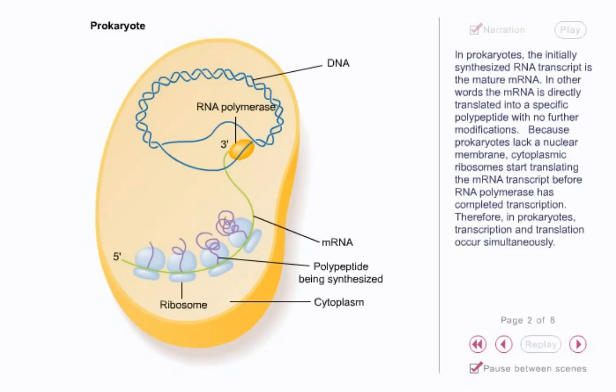In prokaryotes, the initially synthesized RNA transcript is the mature mRNA. In other words, the mRNA is directly translated into a specific polypeptide with no further modifications. Because prokaryotes lack a nuclear membrane, cytoplasmic ribosomes start translating the mRNA transcript before RNA polymerase has completed transcription. Therefore, in prokaryotes, transcription and translation occur simultaneously.